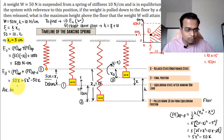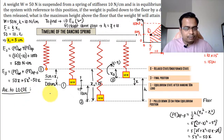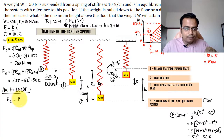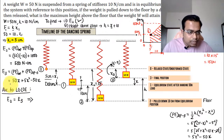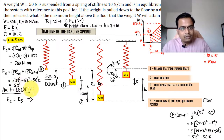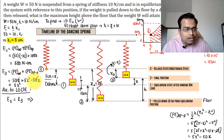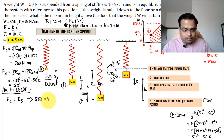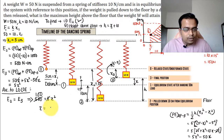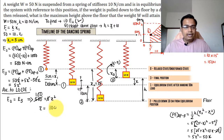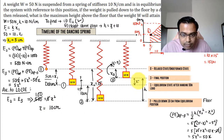By the law of conservation of energy, energy at position 2 equals energy at position 3. So 500 = 5x², which gives x² = 100, therefore x = 10 centimeters. The block rises 10 centimeters above the datum.